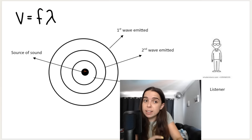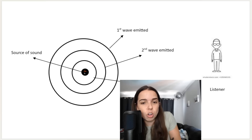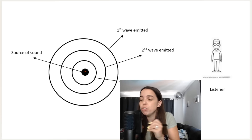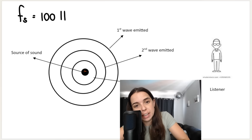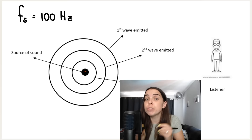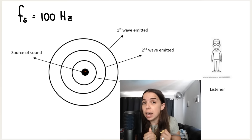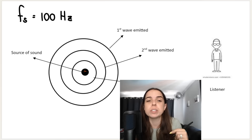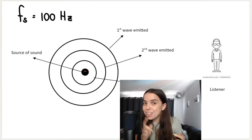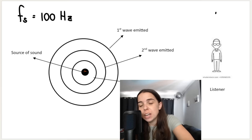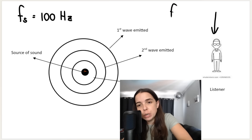There is no Doppler effect occurring because there is no relative movement between the source — the police car — and the listener. What that means is that if the source is producing a frequency of, say, 100 hertz, then a person inside the car will also hear 100 hertz, and you standing all the way over here will also observe a frequency of 100 hertz.